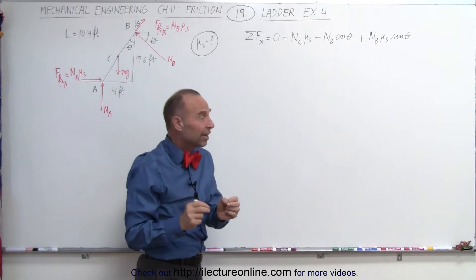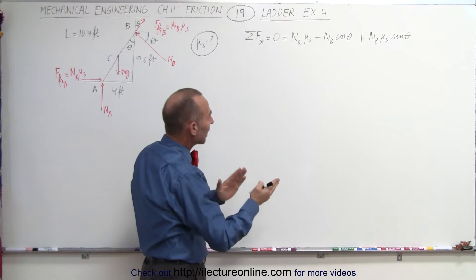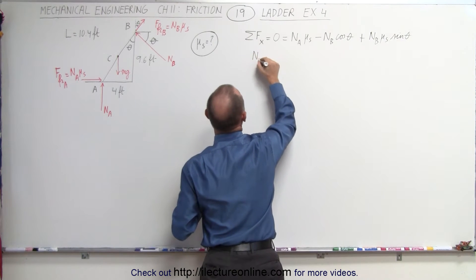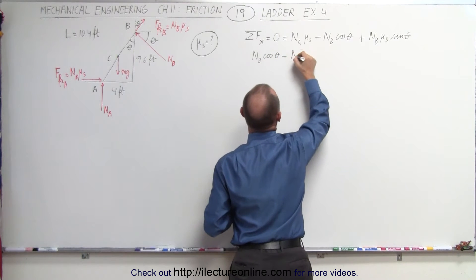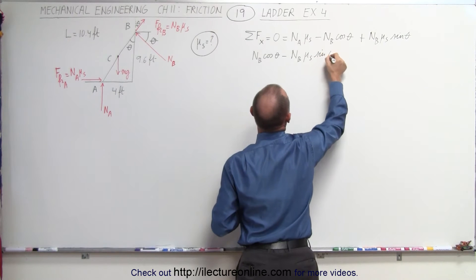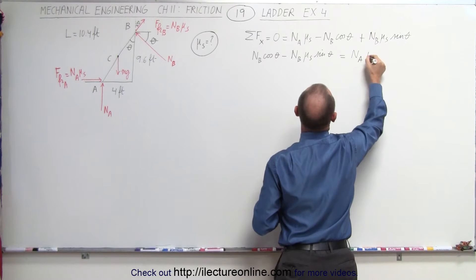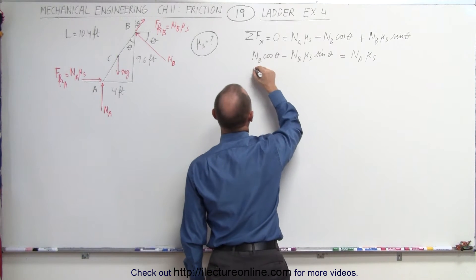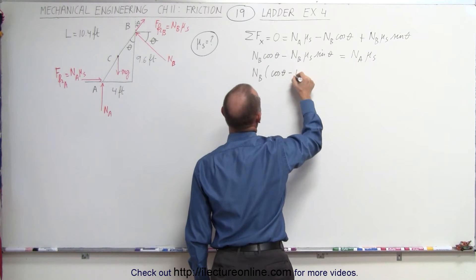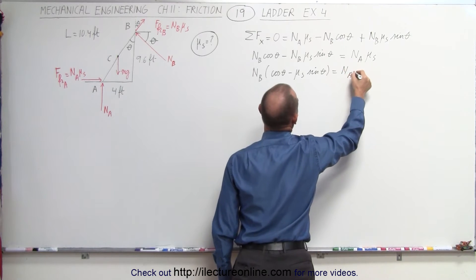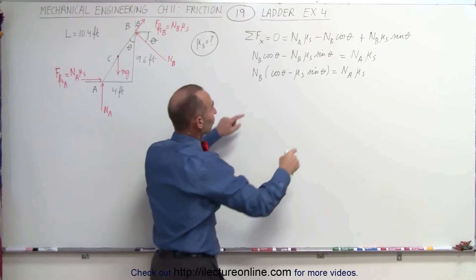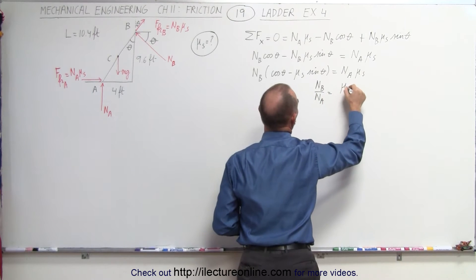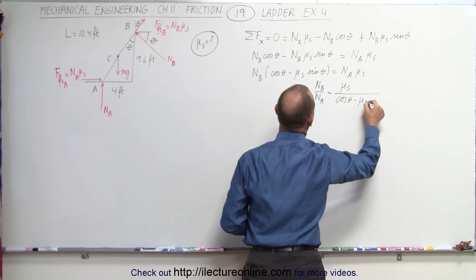We want to relate the ratio of N sub A and N sub B to mu sub S. Moving terms across, we get N sub B times cosine of theta minus N sub B times mu sub S times sine of theta equals N sub A times mu sub S. Factoring out N sub B: N sub B times (cosine of theta minus mu sub S sine of theta) equals N sub A times mu sub S. Rearranging, N sub B divided by N sub A equals mu sub S divided by (cosine of theta minus mu sub S times sine of theta).